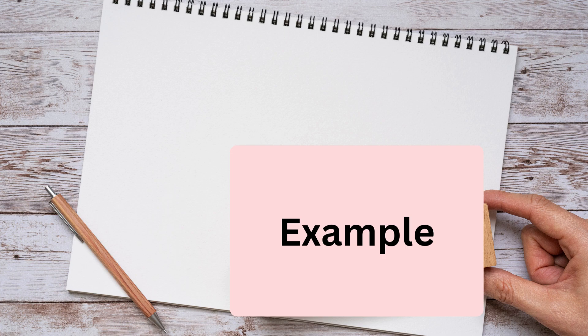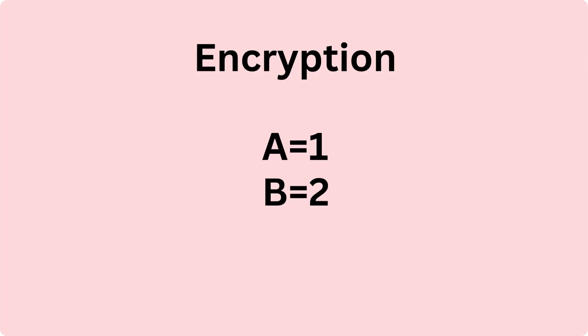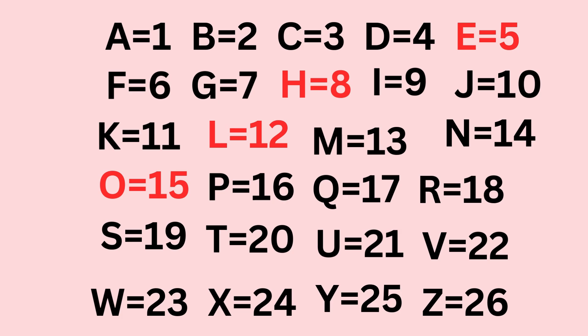Example 1 — a simple daily life example. Imagine you are writing a secret letter to your friend. Encryption: you replace each letter with a number — A equals 1, B equals 2, etc. So 'hello' becomes 8, 5, 12, 12, 15.